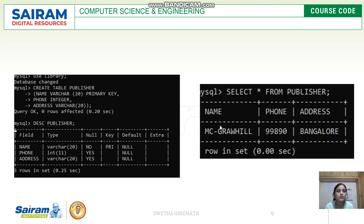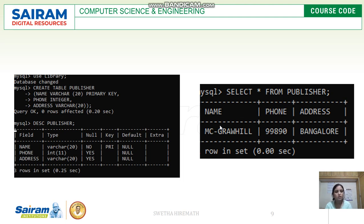I have given the command SELECT * FROM publisher. I inserted one value into the publisher table — it contains name as 'McGraw Hill', phone number as 99890, and address as Bangalore. This is displayed once we give the SELECT * FROM publisher command, showing the correctly created table.